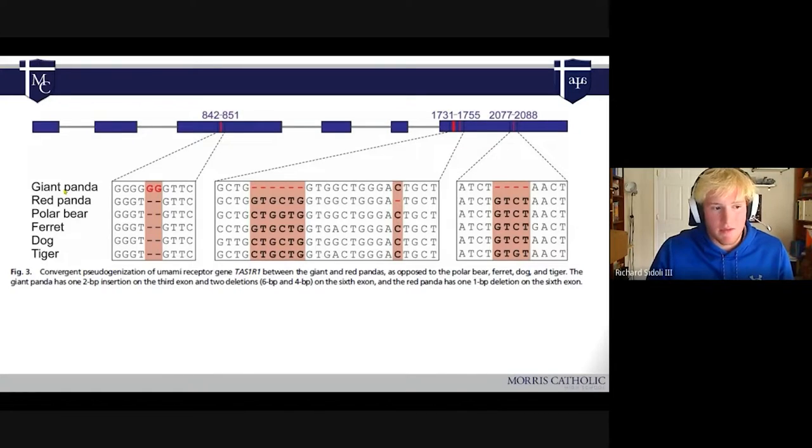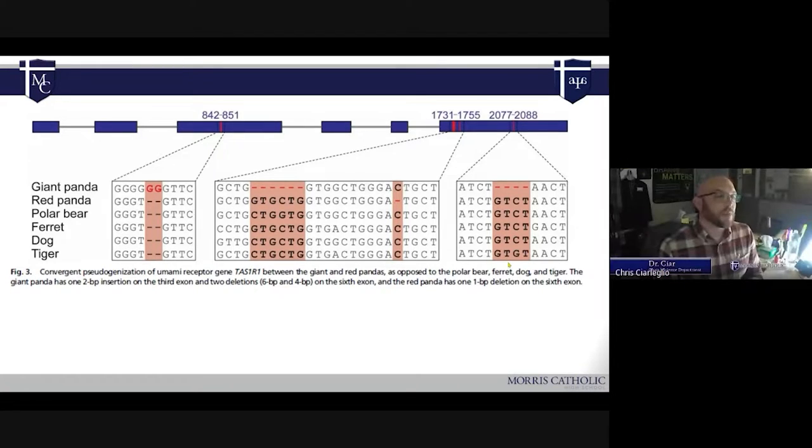On the giant panda, it's a bit more complicated, but there's an insertion and then two deletions that mean the giant panda actually loses the ability to taste the umami flavor. The function of this gene didn't actually have any benefit to them. And so over time, as they're continually eating the bamboo diet, it fell out of use. That change wasn't selected against.